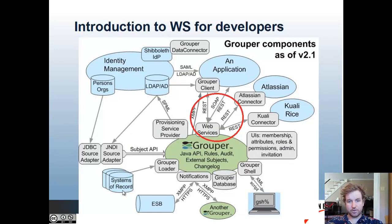Web Services use the Grouper API to talk to the Grouper Registry, and then various clients and connectors will talk to the Web Services remotely over the Web Service API.